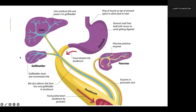The liver produces bile and passes it to the gallbladder, which stores and concentrates it. The bile duct then delivers bile from the liver and gallbladder to the duodenum. Food is pushed down to the duodenum by peristalsis, where enzymes from the pancreatic duct also enter. The stomach wall lines itself with mucus to avoid getting digested.